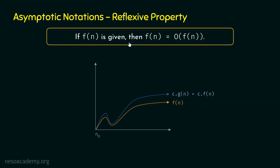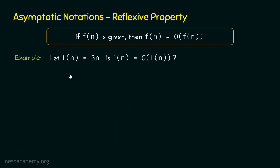If F(n) is some function and it is available to us, then F(n) is O of F(n). Now let's try to prove this mathematically as well. Through the graphical representation it is clear that F(n) can grow asymptotically bigger than F(n), but now let's prove this reflexive property mathematically. For this, let's take a simple example and from the example let's try to prove this property.